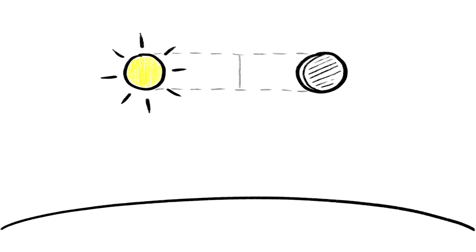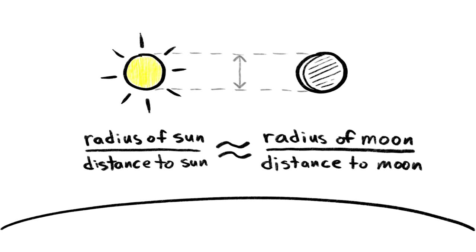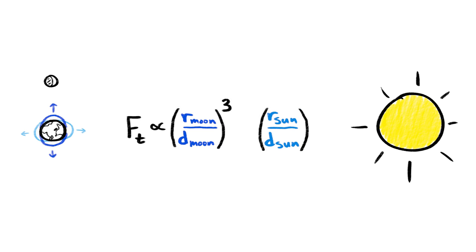If two objects have the same apparent size in the sky, like the Moon and the Sun, it means that their radii divided by their distances have about the same value. This also implies that the strengths of the object's tidal forces, which are roughly proportional to the radius over the distance cubed, will also be about the same.